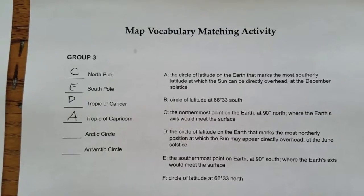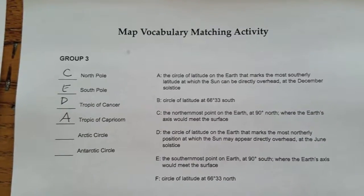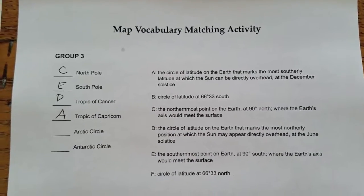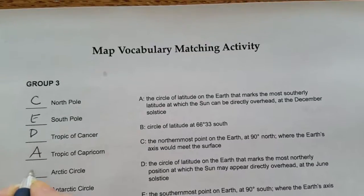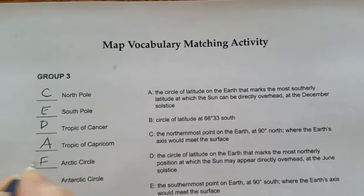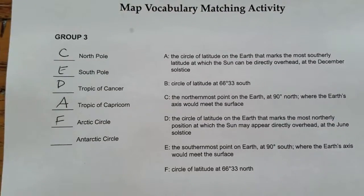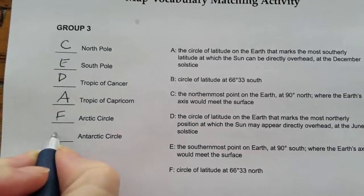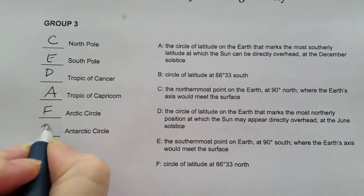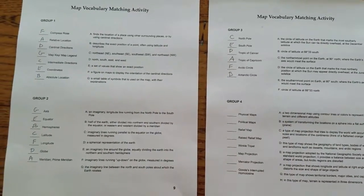The Arctic Circle would be the circle of latitude at 66 degrees north. It's just a simple matching activity to review what they've learned in the lesson.